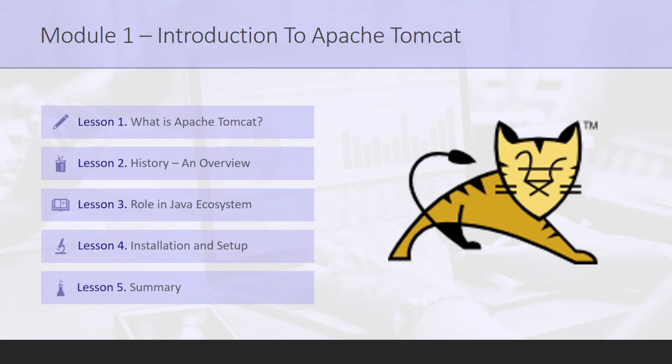Hi everyone, welcome to the first module of the Apache Tomcat course. Here is our agenda for this module: we are going to cover what is Apache Tomcat, then the history and overview of Apache Tomcat, then we will discuss the role of Apache Tomcat in the Java ecosystem, then we will proceed toward the practical work of installation and configuration of Apache Tomcat, and then we will summarize this module.